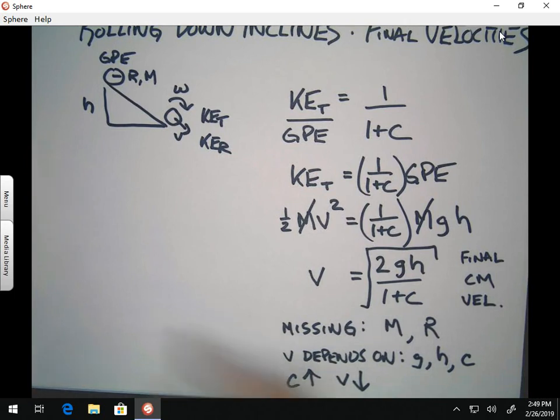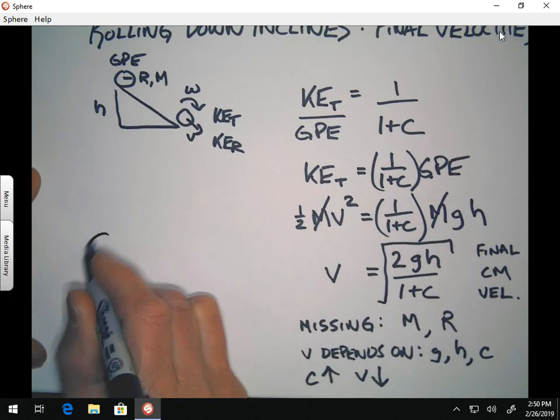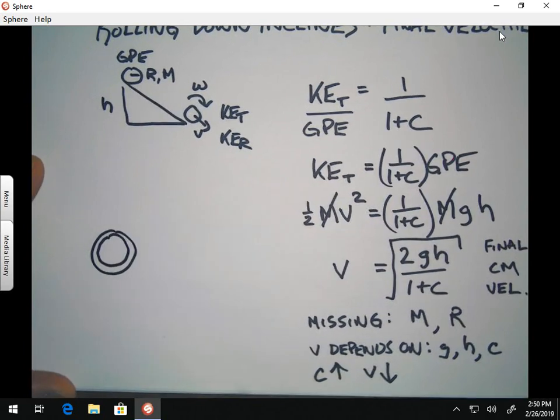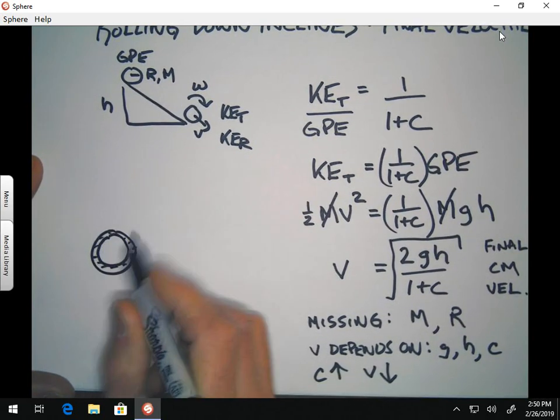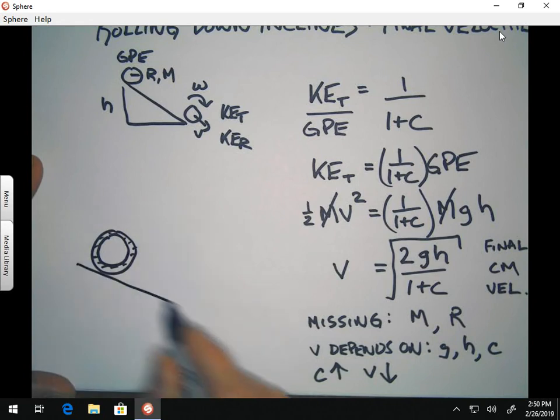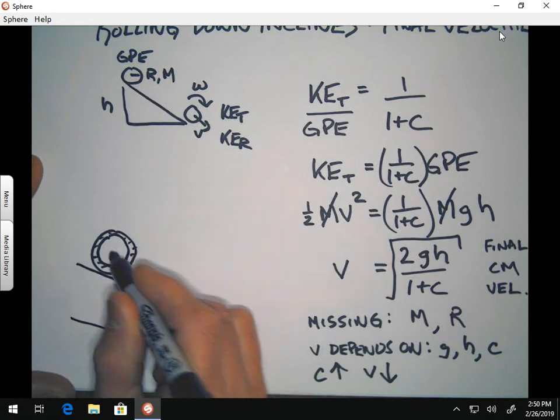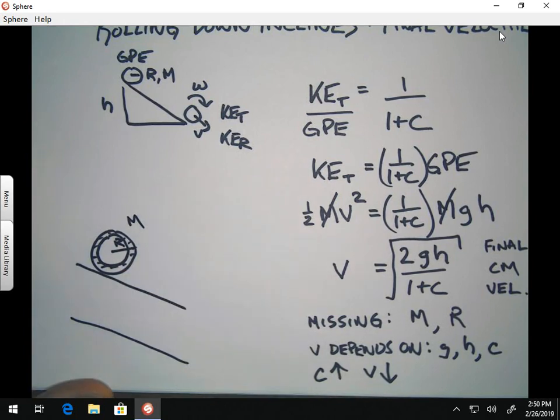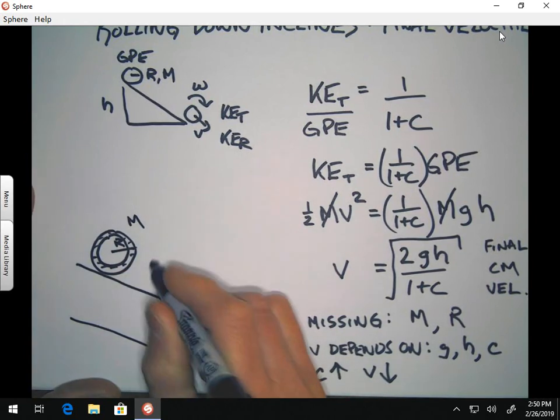And so, for example, just to make a picture of it, if you have like a hoop, has a radius R and a mass M, the shape factor of that hoop is equal to one.